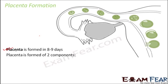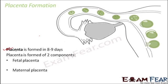The placenta structure is composed of two components: the fetal placenta and the maternal placenta. A part of the placenta is formed from the fetal body and a part from the mother's body, and these two components join together to form what is called the placenta.